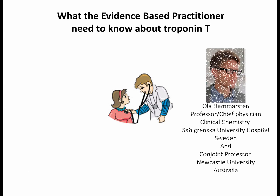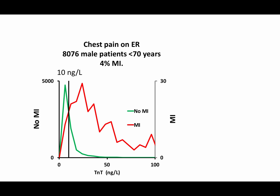My name is Ola Hammerstein. I'm a professor and chief physician at Clinical Chemistry and responsible for the Troponin Clinic in Gothenburg, Sweden. I will visualize how risk of missing myocardial infarction interacts with Troponin T-levels and false positives, by examining baseline Troponin T-levels and the risk of myocardial infarction among patients with chest pain using a dataset from our emergency ward at Sahlgrenska Hospital.